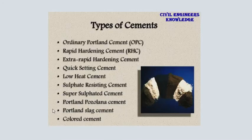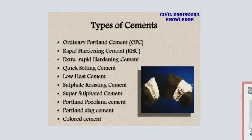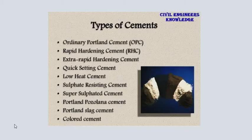Types of cement: ordinary portland cement (OPC), rapid hardening cement, extra rapid hardening cement, quick setting cement, low heat cement, sulfate resistant cement, super sulfate cement, portland pozzolana cement, portland slag cement, and colored cement — these are the different types of cement.